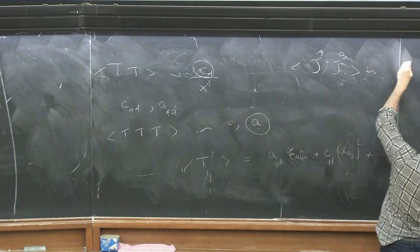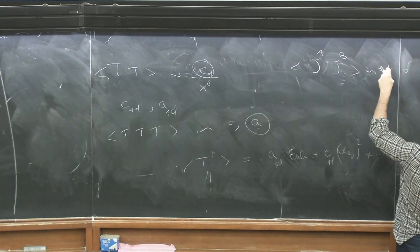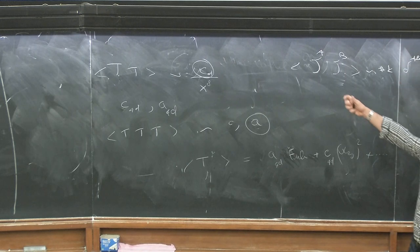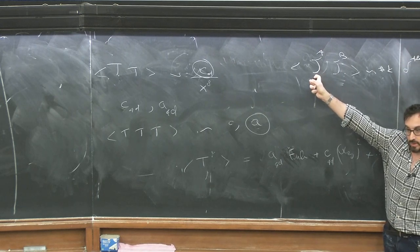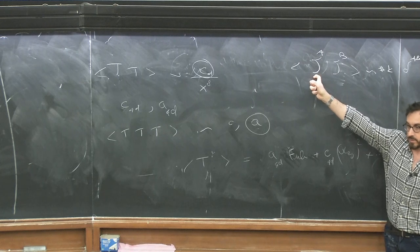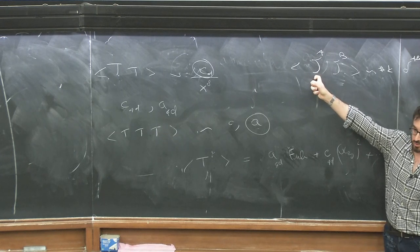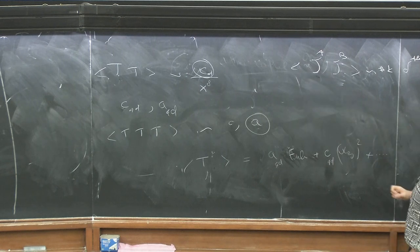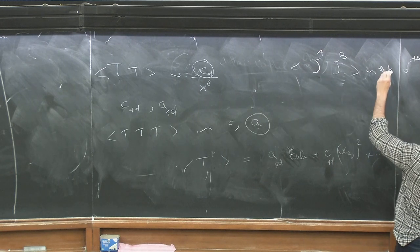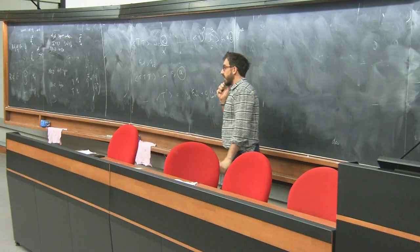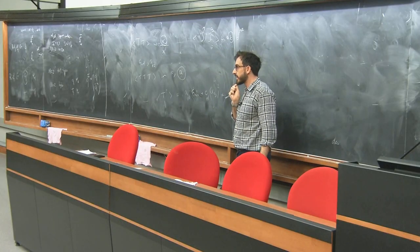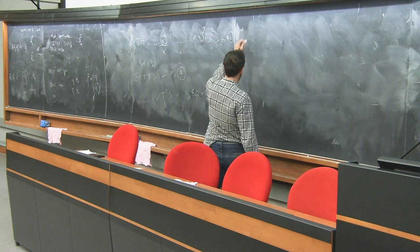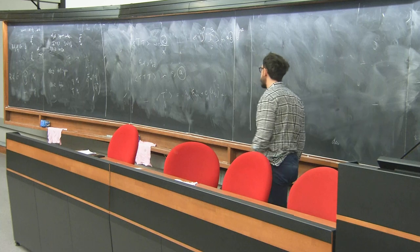The A and C anomaly coefficients are important data of the CFT, readable from the OPE coefficients of the stress tensor. Famously, the A anomaly is the object which is monotonic under RG flow, whereas C is not. From the normalization of a non-abelian current — in certain conventions where you cannot mess with the normalization since the conserved charges must obey the Lie algebra with fixed normalization — you can read off the level K, which is another basic datum of your conformal field theory.